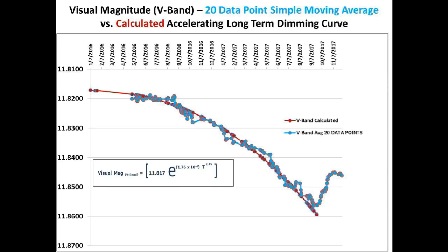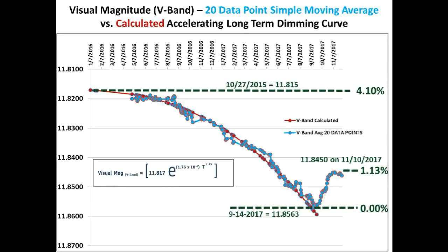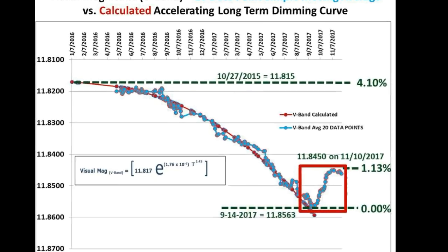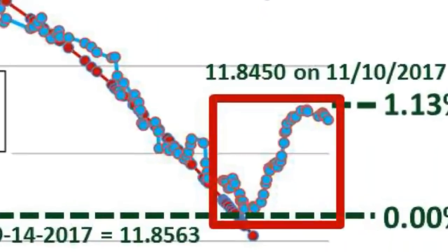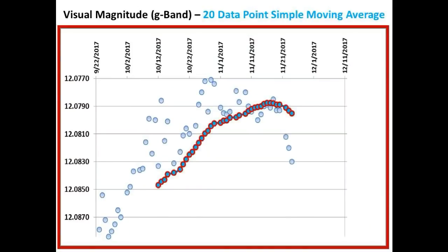The brightening event, which achieved a 1.13% reversal in the flux dimming, is now headed back down for sure. That brightening event is highlighted in the red box. Let's take a closer look and update the curve of this brightening event using Bruce Gary's G-band measurements.